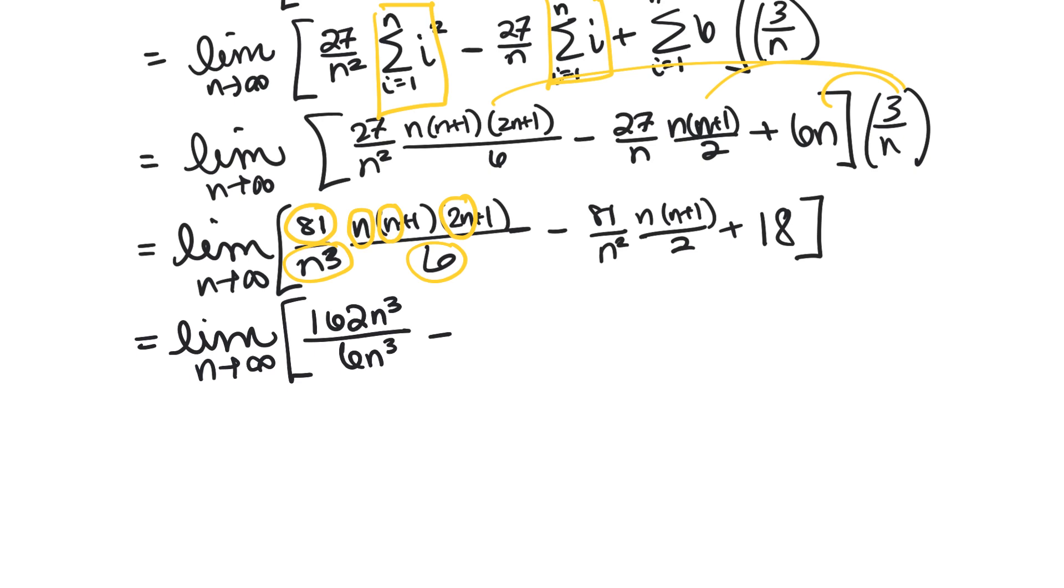And then we're going to subtract, we're going to have 81 times n times n for the highest power in that term, so that would be 81 n squared over the 2n squared that's on the bottom, and lastly we have 18. So now this is a limit that's easy to do because we can just cancel all these ends and we get 162 over 6 minus 81 over 2 plus 18.